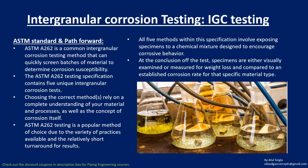Regarding ASTM standards for intergranular corrosion testing, ASTM A262 is the globally recognized standard used for this purpose. It provides five unique test methods to quickly screen batches of material and determine their corrosion susceptibility. The correct method must be selected based on understanding of the material, the processes involved, and the concept of corrosion itself.